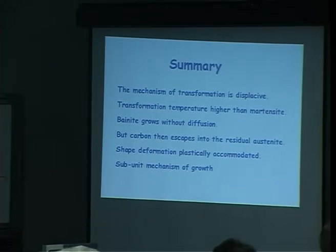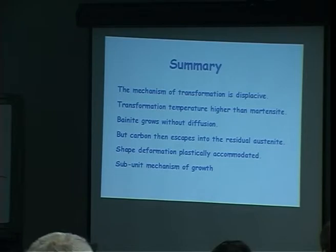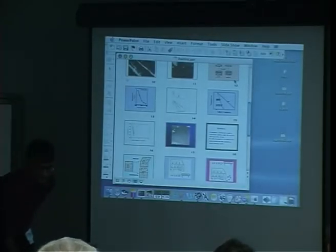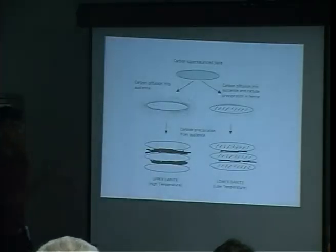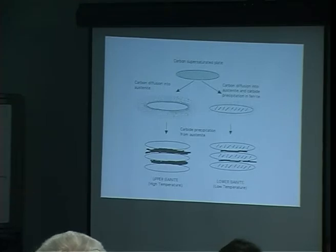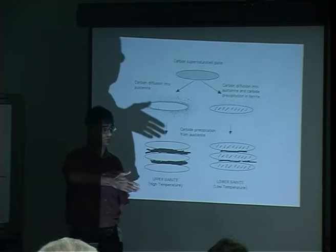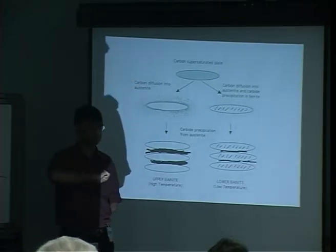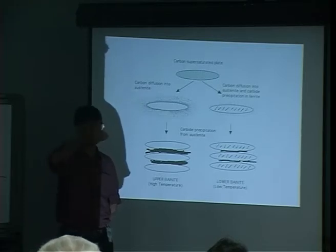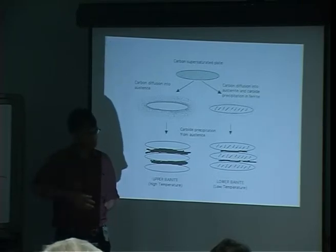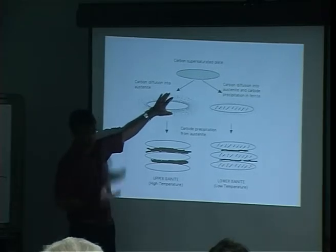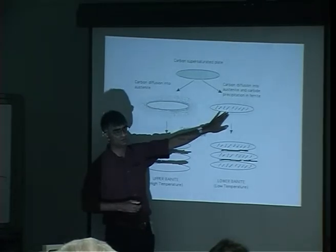Q&A: Modern steels contain very little carbon — less than 0.1 weight percent, sometimes 0.03 weight percent — and don't show a clear distinction of upper and lower bainite. The quantitative theory predicts that when you get to less than about 0.4 weight percent carbon in a plain carbon steel, you do not ever get lower bainite. You go from pearlite to upper bainite straight to martensite, because the carbon can partition so rapidly at low carbon concentration that there's never an opportunity to precipitate cementite.